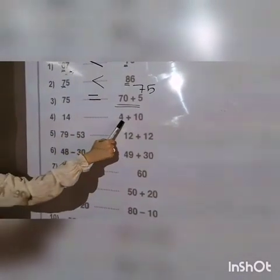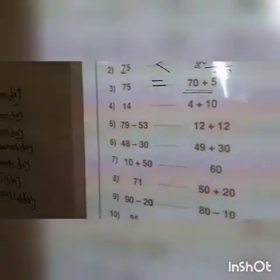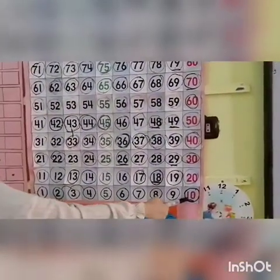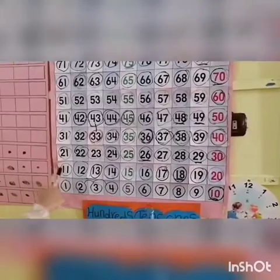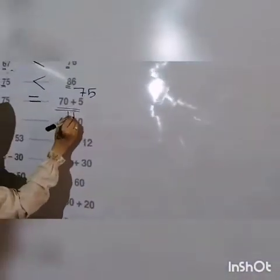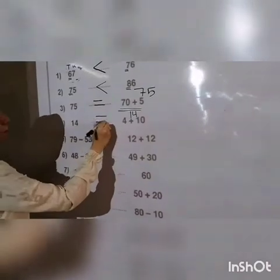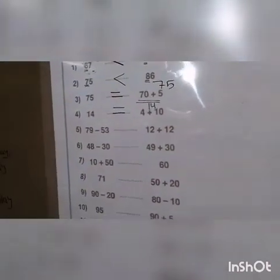Number four: we have fourteen and four plus ten. By using the 1–120 chart, stand on ten and go four forward steps: one, two, three, four — the number will be fourteen. Fourteen and also fourteen, so put equal because fourteen is the same as fourteen.